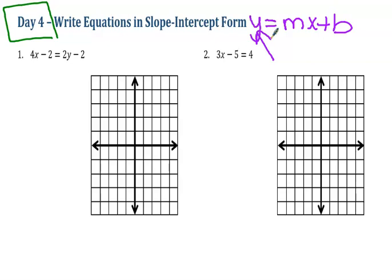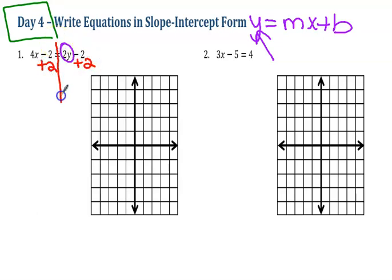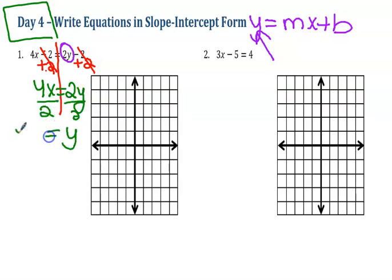Getting y by itself means moving everything away from y. If I have a negative two, I move it to the other side by adding two — negative two plus two goes away. I drop everything else down, so I have 4x equals 2y. Then I divide both sides by two because that is the inverse.